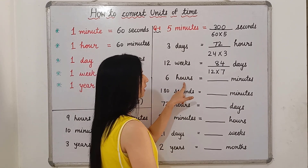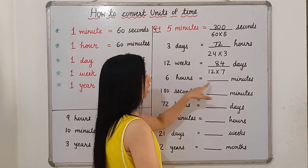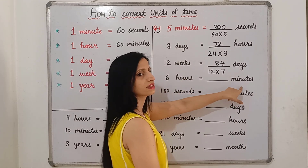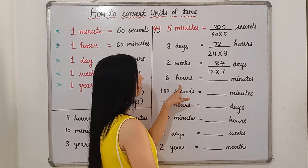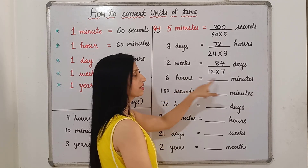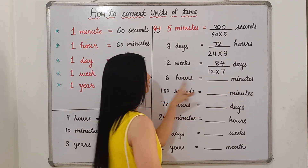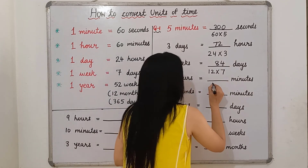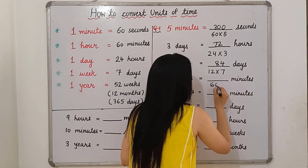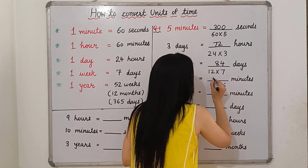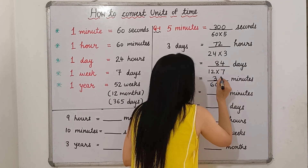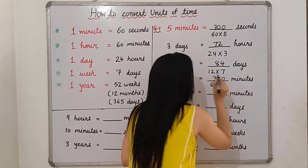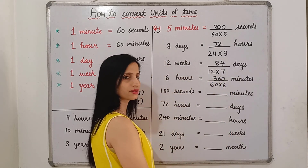6 hours — how many minutes? In 1 hour there are 60 minutes, so in 6 hours it will be 60 multiplied by 6. We will get 360 minutes.